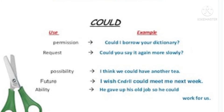Next is 'could,' used to ask permission again but more politely than 'can.' For example, 'Could I borrow your dictionary?' or 'Could I get your bicycle for today?' It is also used to make requests: 'Could you say it again more slowly?' — that is a more formal way of requesting. It also expresses possibility: 'I think we could have another tea.' And ability: 'He gave up his job so he could work for us.' Both 'can' and 'could' express ability, possibility, permission, and request, but 'could' is more polite.